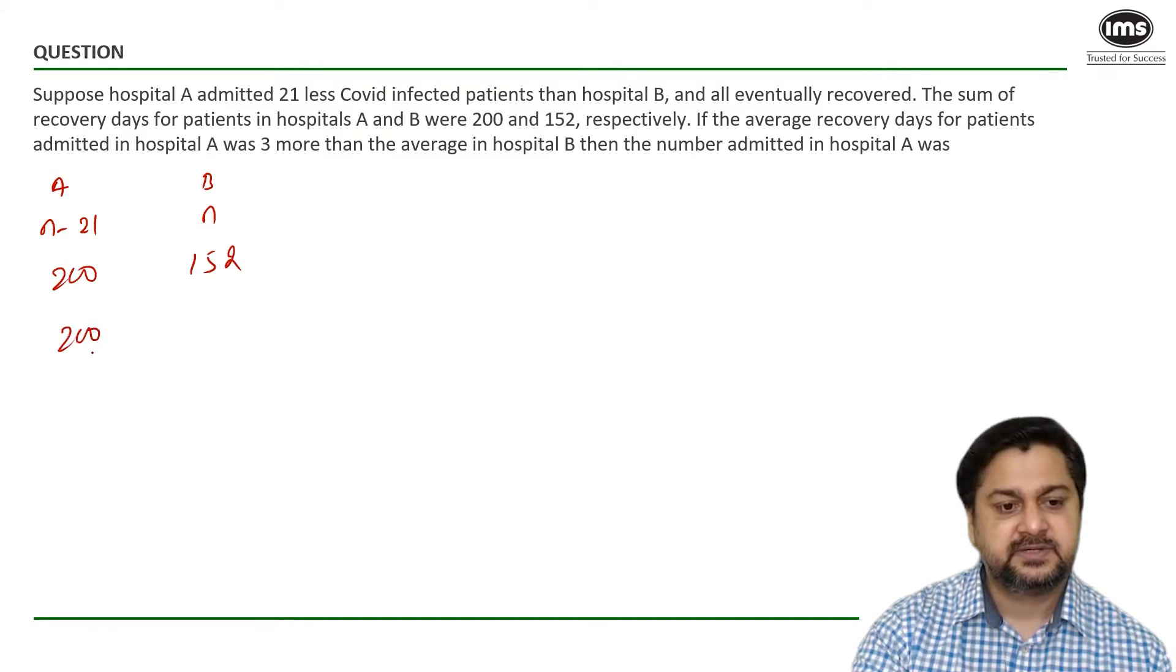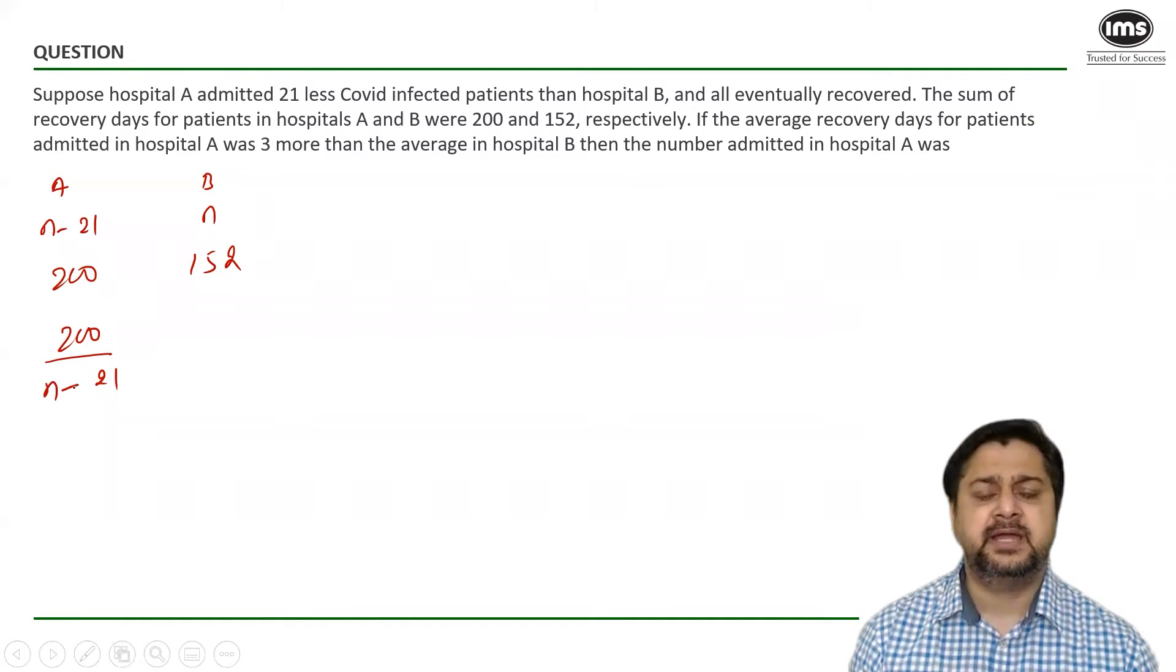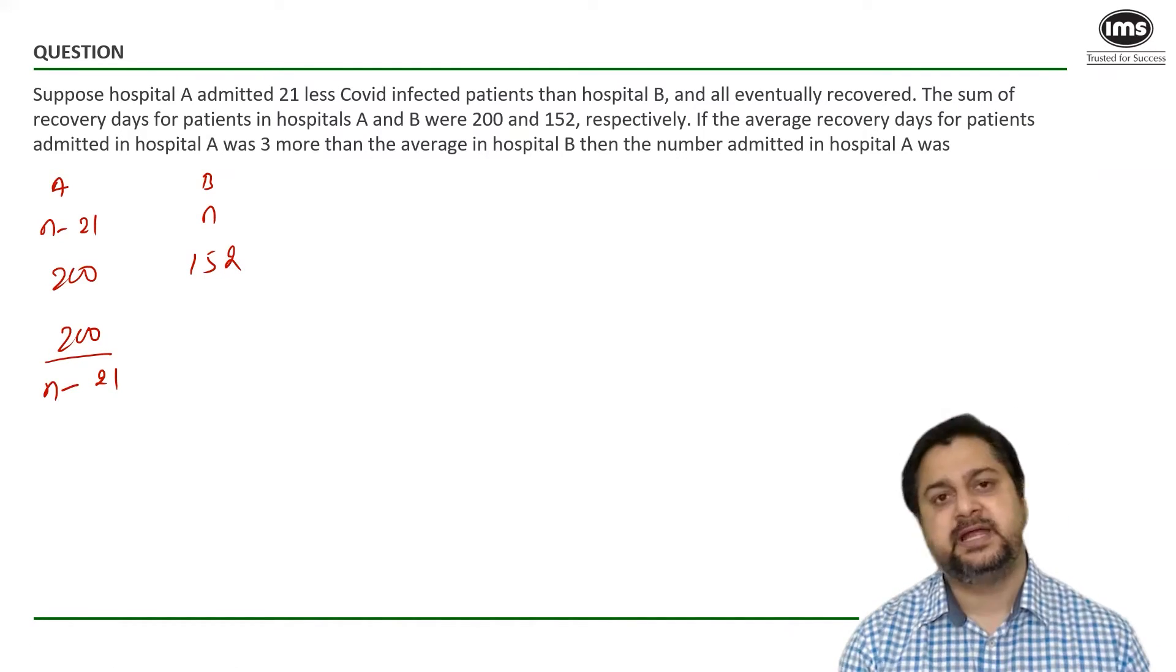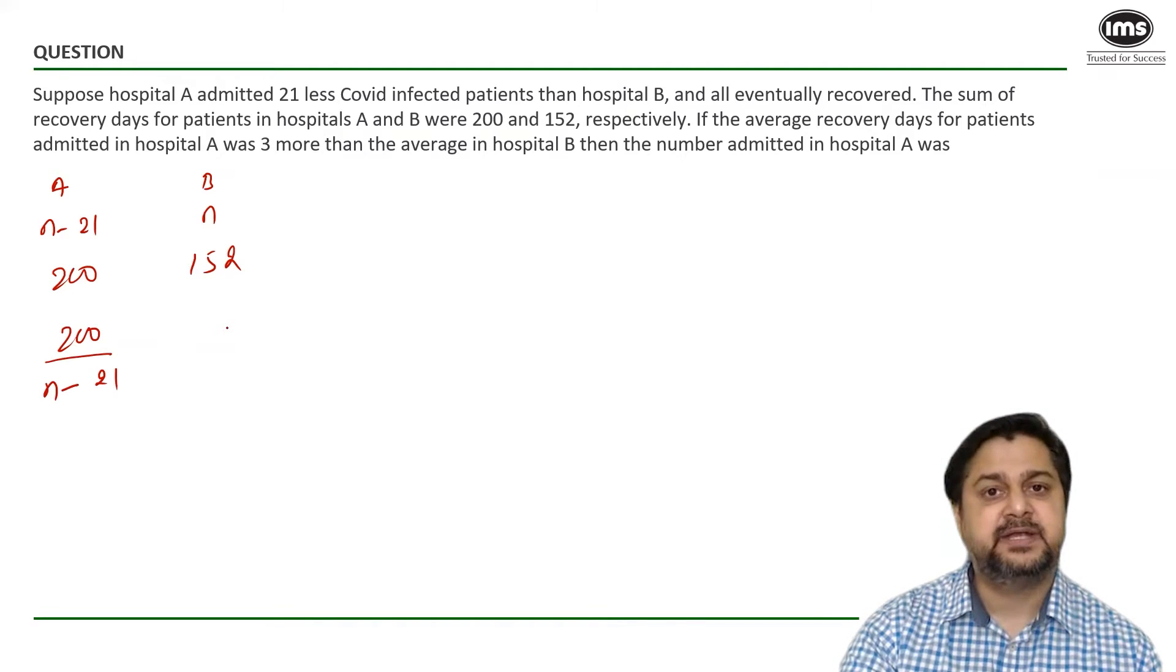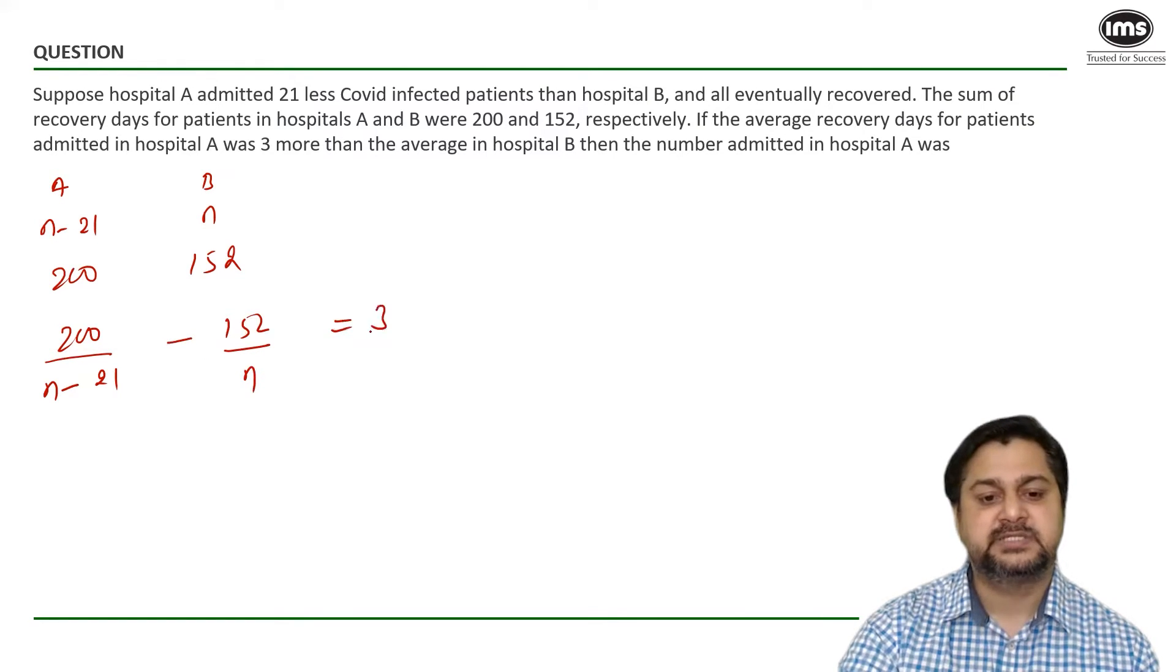We know the total number of days divided by the number of patients. That is the average number of days per patient taken in hospital A. So similar thing can be done for hospital B. That would be 152 divided by N. And this difference is equal to 3.